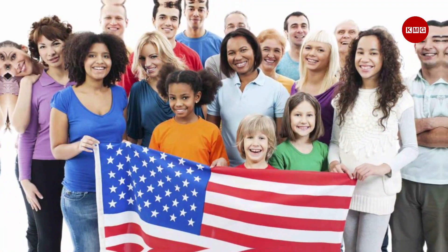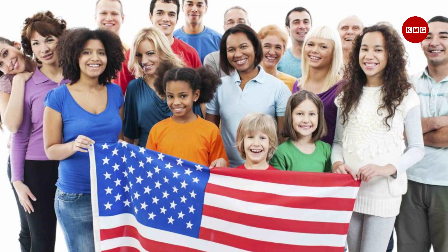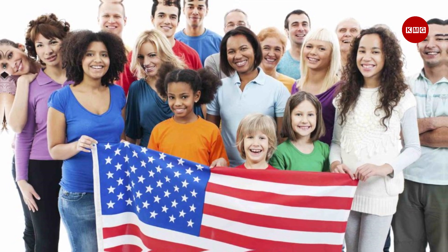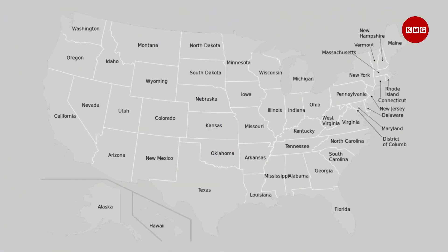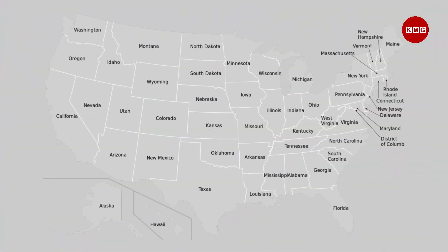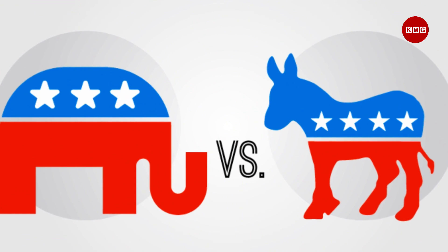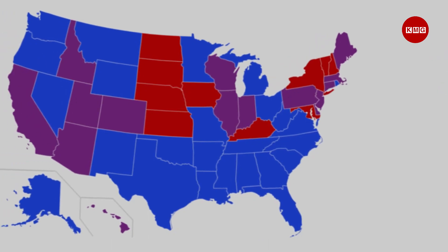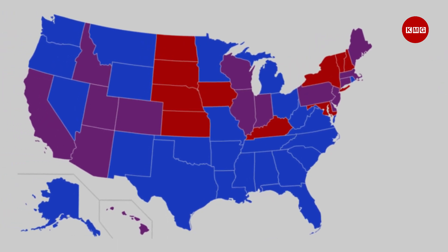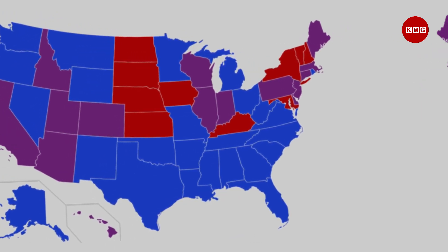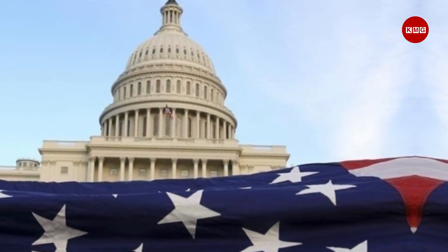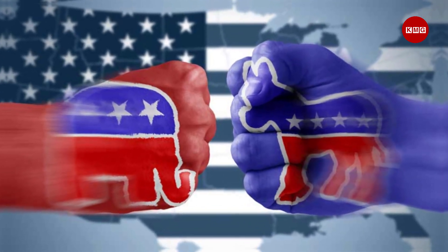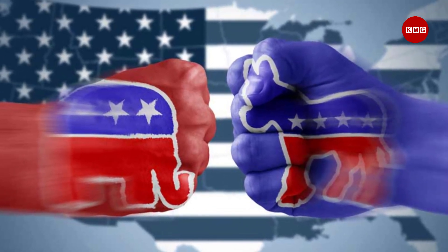Well, it tells us that there is more diversity and complexity than we might think, and that we should not judge a state by its color or its party affiliation alone. It also tells us that there are many factors that shape the political culture and identity of each state, and that they can have a significant impact on the policies and politics of the nation as a whole. I hope you enjoyed this video and learned something new.